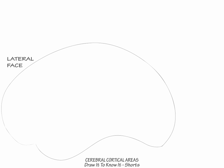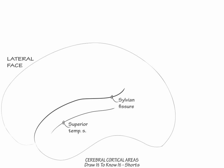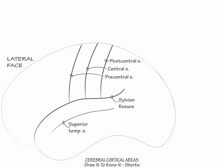Here we will draw select fundamental cerebral cortical areas. To begin, draw a lateral face of the cerebral hemisphere. Include the Sylvian fissure and the following sulci: the superior temporal, central, post-central, and pre-central sulci.